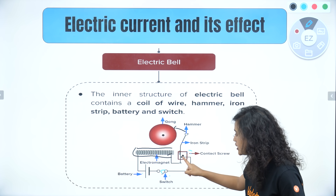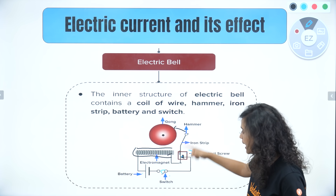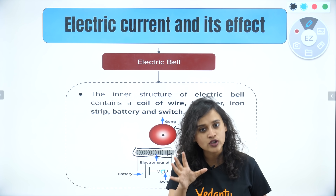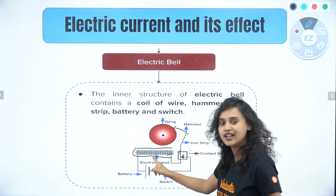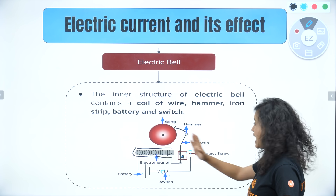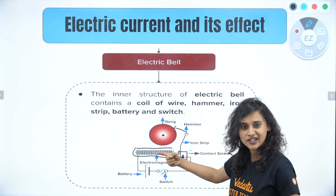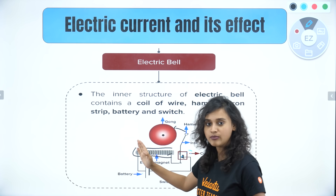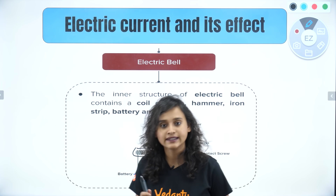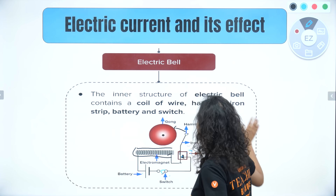As the iron strip is pulled towards the gong, a gap forms between the iron strip and the contact screw. This breaks the connection, so the electromagnet stops working and the hammer comes back to its original position. As soon as the hammer returns, the connection is restored, the electromagnet starts working again, and it pulls the hammer back — and that is why it keeps hitting the gong again and again. That is exactly how your electric bell in school works.